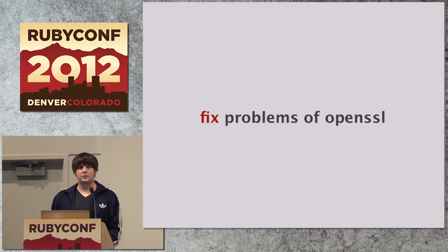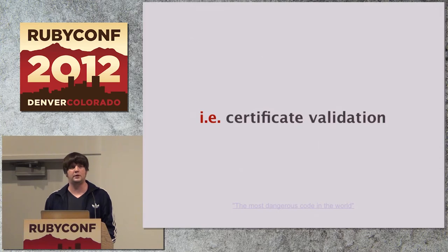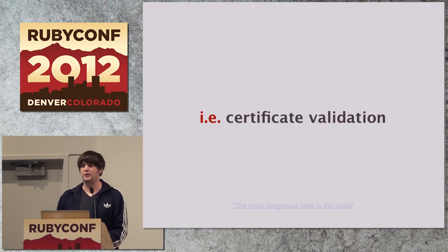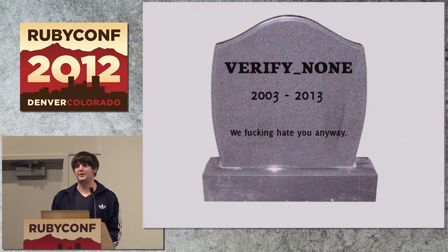I also want to fix some of the problems that currently exist with OpenSSL — JVM users and Windows users probably know this. The biggest problem I currently see is the way OpenSSL handles certificate validation. There's just recently been a paper where somebody analyzed how popular applications deal with certificate validation, and most of the time it's wrong because the API is just way too complicated. And OpenSSL doesn't want to implement proper HTTP support, so it's really hard to use URLs or OCSP. My goal is that once this is finally done, we can hopefully kiss OpenSSL goodbye.